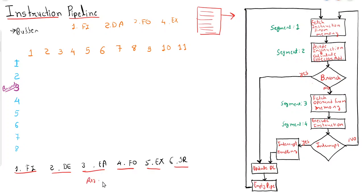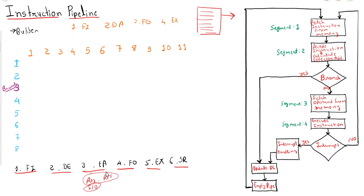For register reference instructions or I/O instructions, calculating the effective address of operand and fetching the operand is not required. So if we implement an instruction pipeline using all six segments, it will waste time or create unnecessary delay for register reference and input/output operations. So how can this be resolved?